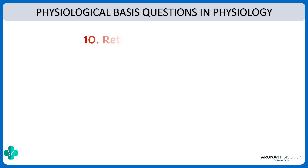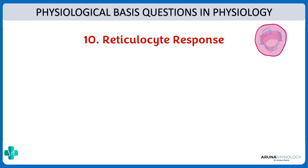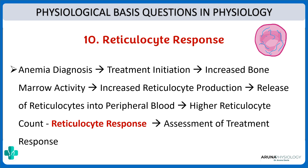Finally, what is the physiological basis of reticulocyte response? Reticulocytes are the immediate precursor cells of RBCs. When we treat anemia, the initial response we observe is the reticulocyte response — an increase in reticulocytes in the peripheral blood. This is because initiating treatment increases bone marrow activity, which in turn increases reticulocyte production and their release into the peripheral blood.